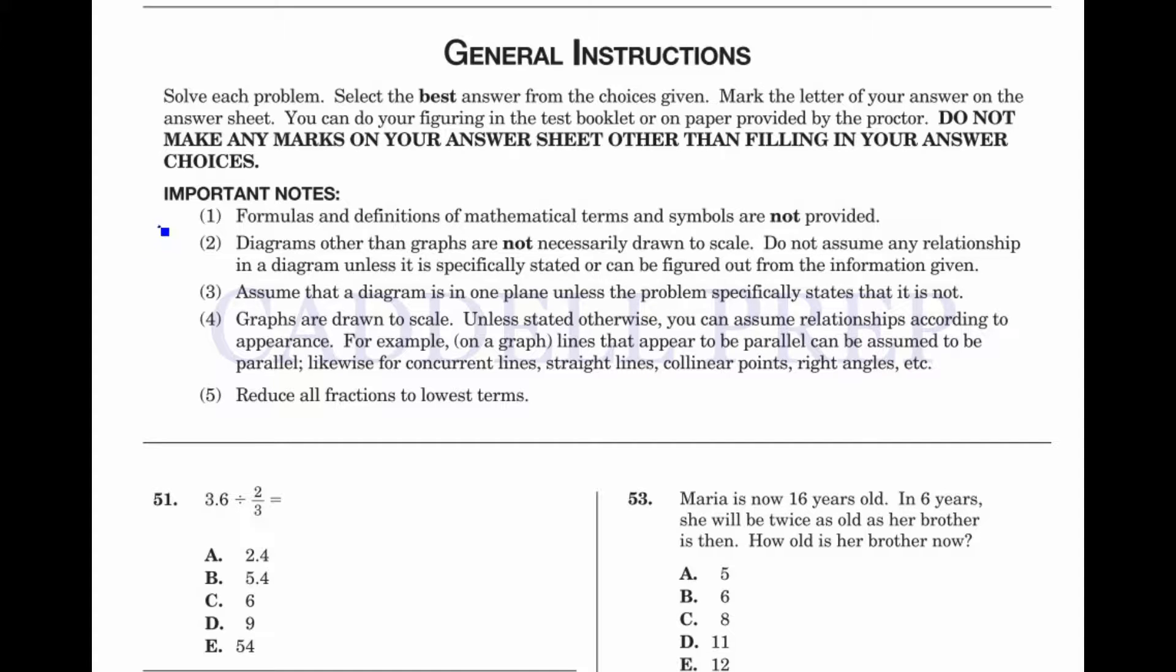So, for example, if you see a triangle like this, this may look like it's 45 degrees, but it doesn't necessarily have to be 45 degrees.